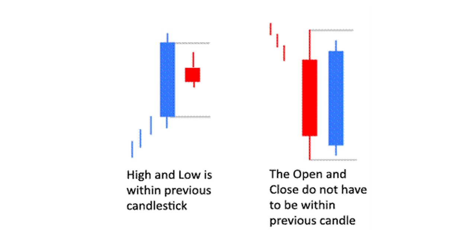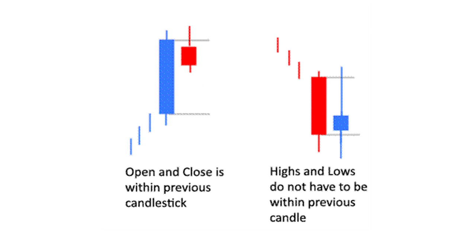The other pattern is the inside bar, which is a bar or series of bars with a high and low encompassed by the preceding candle. The variation is the harami, a bar or series of bars with an open and close within the range of the bar preceding it, rather than a high and low.